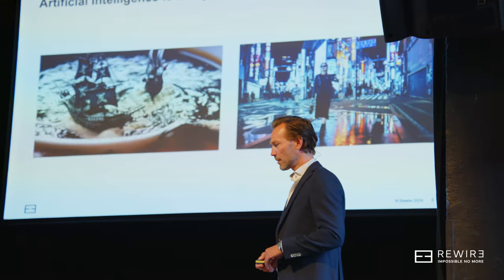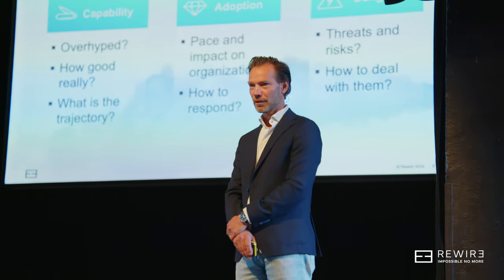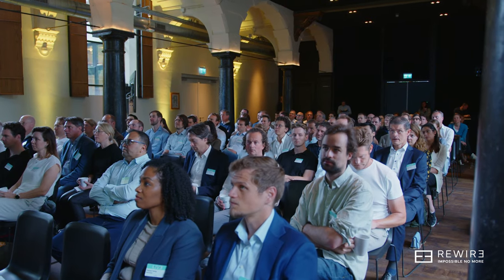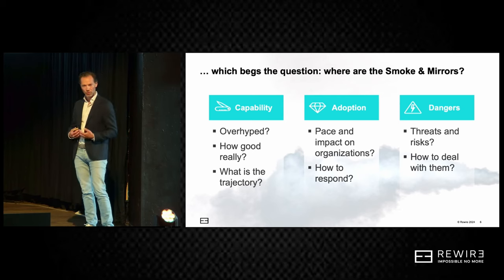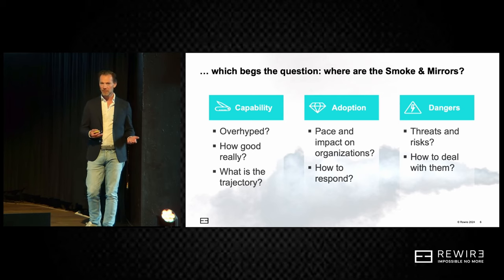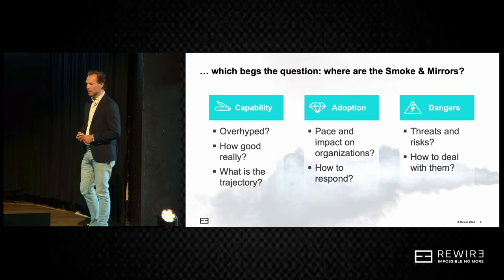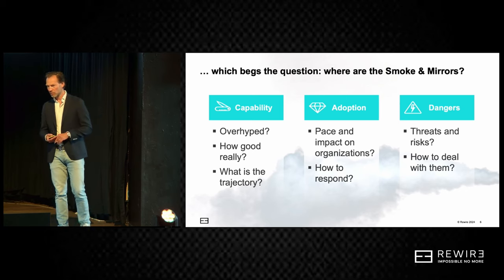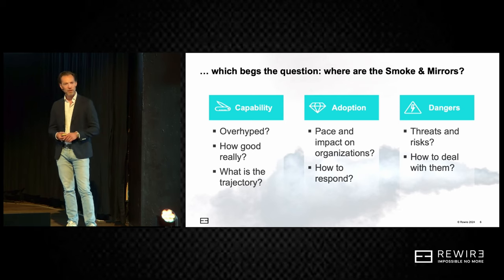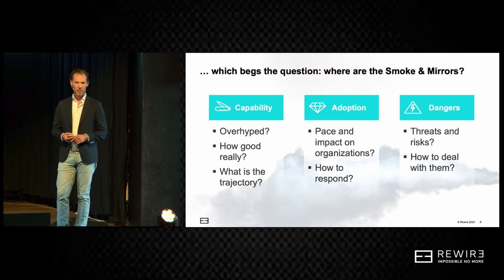So if AI is today's magic lantern, it begs the question: where's the smoke and where are the mirrors? Leaders in organizations — really anyone working in an organization today — should ponder a few questions: How good is this AI capability really? Is it overhyped? What is the trajectory — are we slowing down or accelerating? Should we jump on it now, or wait and let others experience the growing pains first? And what are the threats and the risks?